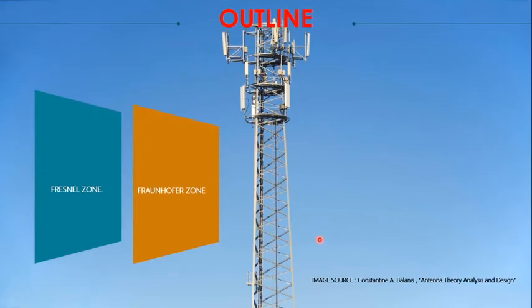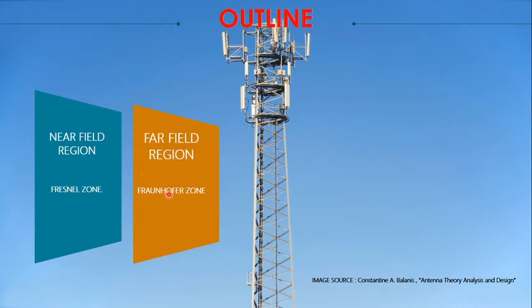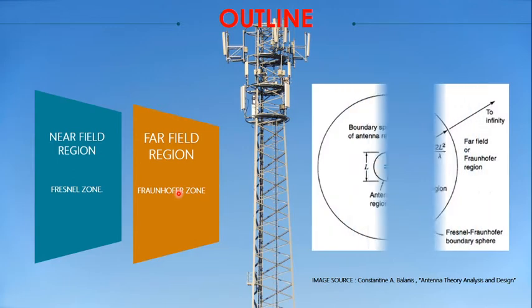The region surrounding an antenna can be classified generally into two zones. The first is called the near field region or the Fresnel zone, and the second one is called the far field region or the Fraunhofer zone. Based on the amount of radiation and the distance, we classify the regions surrounding an antenna into these two zones.